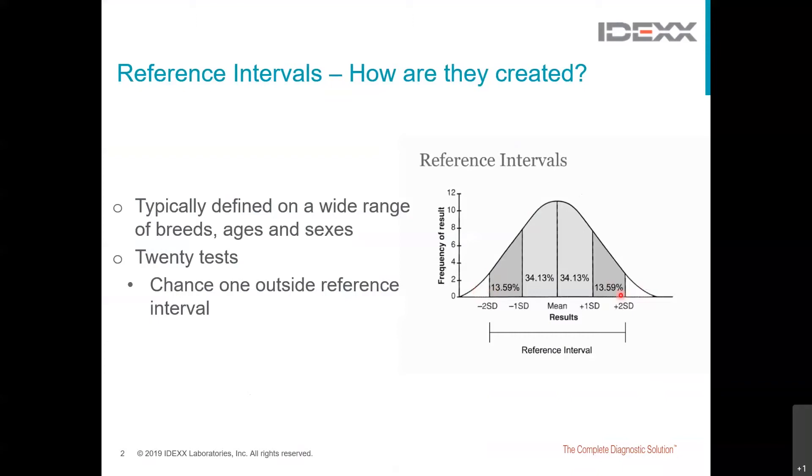This will lead to 5% of normal patients having a result outside of the reference interval for any one test. When numerous tests are run on the same animal, the chances of obtaining one or more slightly abnormal results on an animal that are actually normal rises. Therefore, if you have a panel of say 20 tests, it is likely that one will be abnormal as a matter of chance. What this means is that small deviations outside the reference interval may not actually be clinically relevant. In other words, clinically healthy animals may have mildly reduced or mildly increased analyte concentrations or activities compared to a reference interval, but the values are actually normal for that animal.